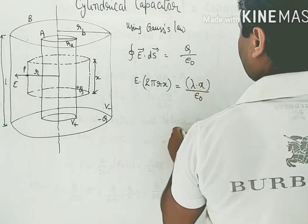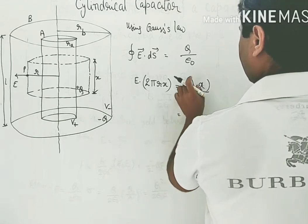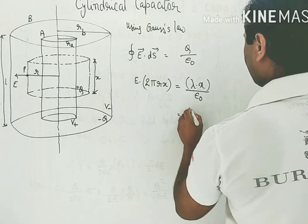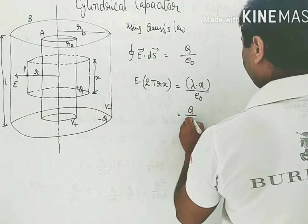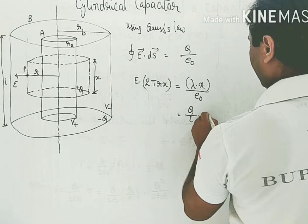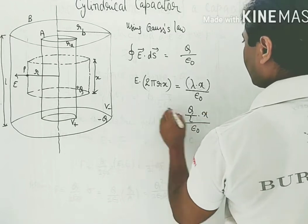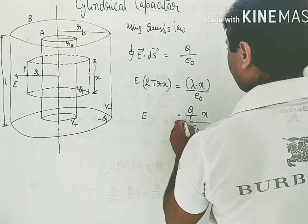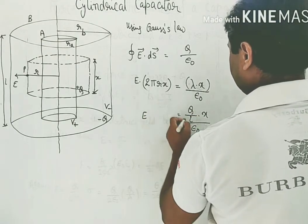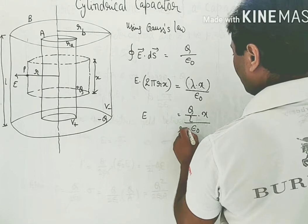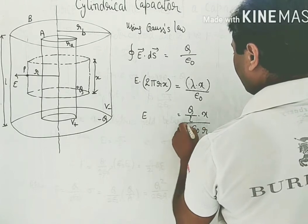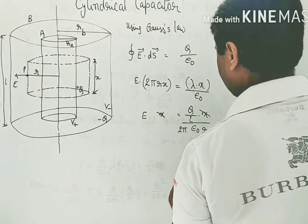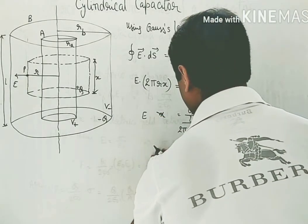The x terms cancel, giving E into 2 pi epsilon naught into r equals Q upon l epsilon naught — so this is the value of electric field. Now we go for the potential difference. The potential difference V equals V due to inner cylinder minus V due to outer cylinder, using the basic definition: minus integral from R_B to R_A of E dr.